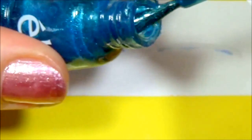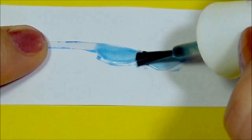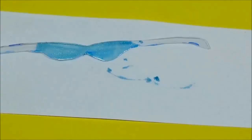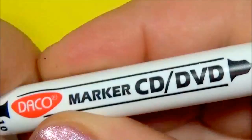You can draw it with permanent marker, or you can paint it with nail polish. Let the nail polish dry.